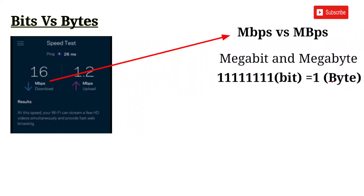The speed test uses a small letter 'b' for bits per second. If we download a file — from torrent or another site — we will download it using this connection.